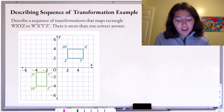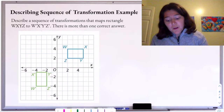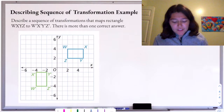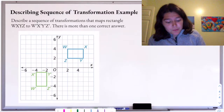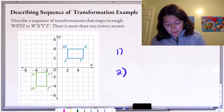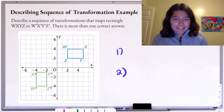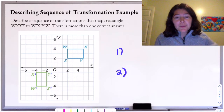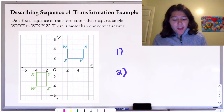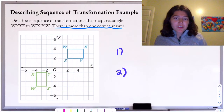This is asking us to describe a sequence of transformations that maps rectangle W, X, Y, Z to W prime, X prime, Y prime, Z prime. There is more than one correct answer. Note here that we're having a sequence of transformations, so there's going to need to be at least two steps that happen. They're only asking us to describe what's happening here, but there are two transformations that have to occur in order to get this shape there.